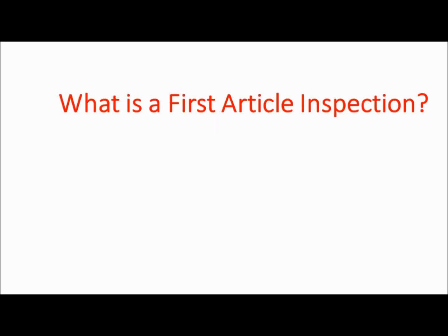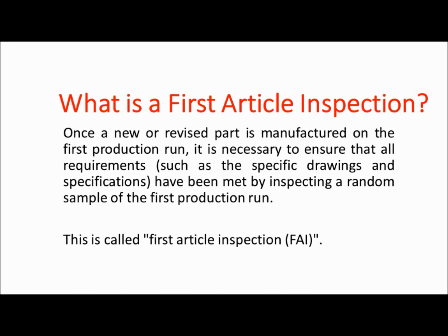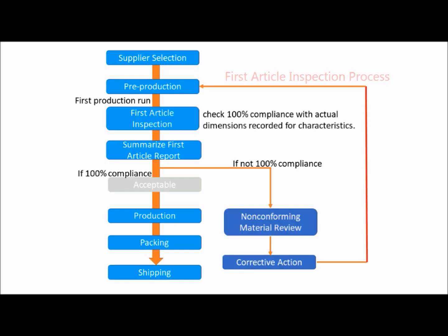What is a first article inspection? Once a new or revised part is manufactured on the first production run, it is necessary to ensure that all requirements, such as the specific drawings and specifications, have been met by inspecting a random sample of the first production run. This is called First Article Inspection, or FAI. This is a first article inspection process flow.